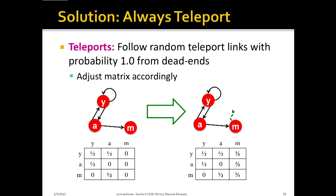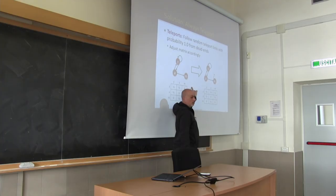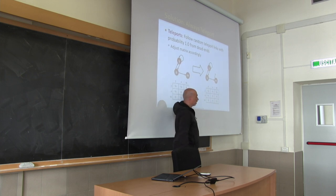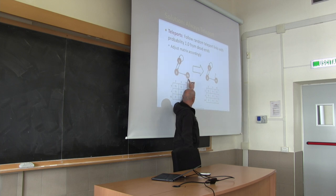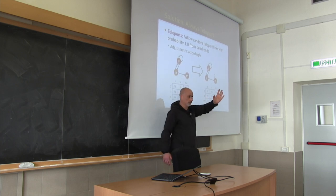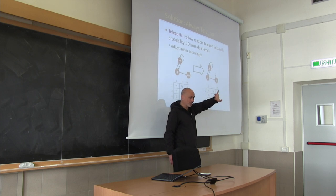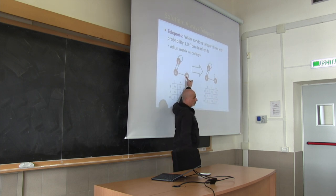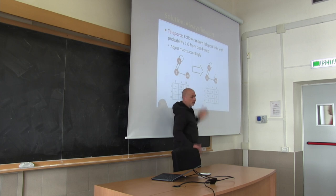Another problem: if a node has no outgoing link — a dead end — then in the adjacency matrix or transition matrix associated to this graph you have a row of zeros or a column of zeros for every such node. It is not even a Markov chain.